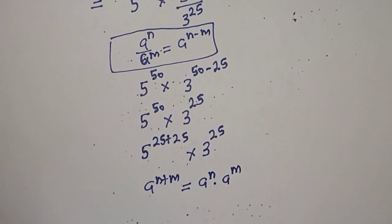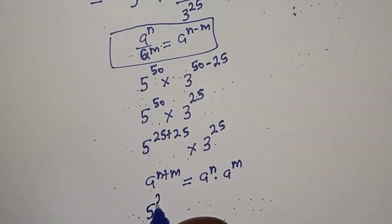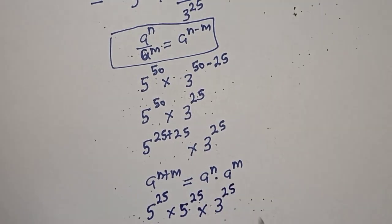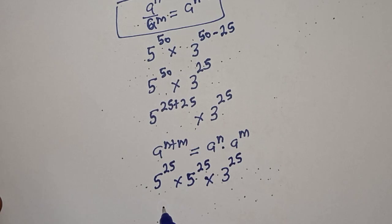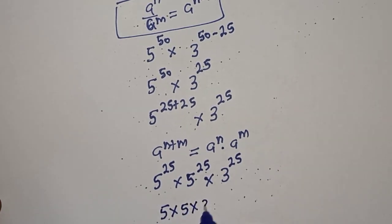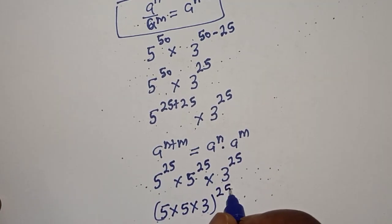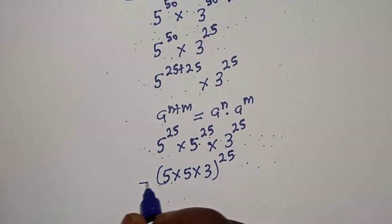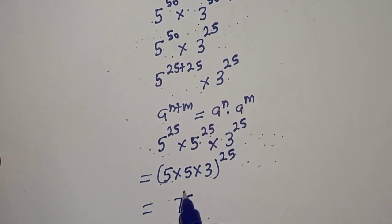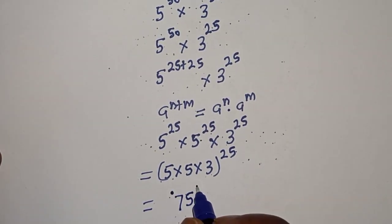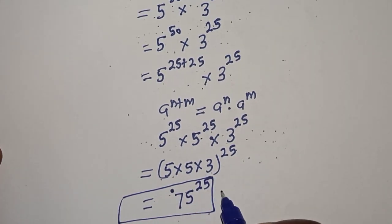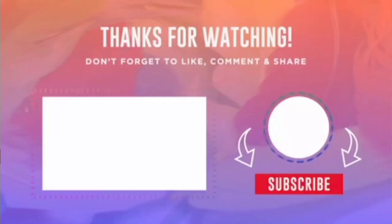From here we have 5 raised to power 25 multiplied by 5 raised to power 25, multiplied by 3 raised to power 25. Since they have the same power, this is 5 times 5 times 3, all raised to power 25 — that is 75 raised to power 25. This is the final answer. Before you leave, like, share, comment and subscribe. Thank you, bye.